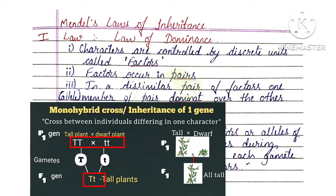In a heterozygous condition — that is, a dissimilar pair — for example in a monohybrid cross, the F1 generation has capital T and small t. This is a dissimilar pair because one is dominant and one is recessive: one is a capital letter, another is a small letter. This type of pair is a heterozygous condition — that is, a dissimilar pair.